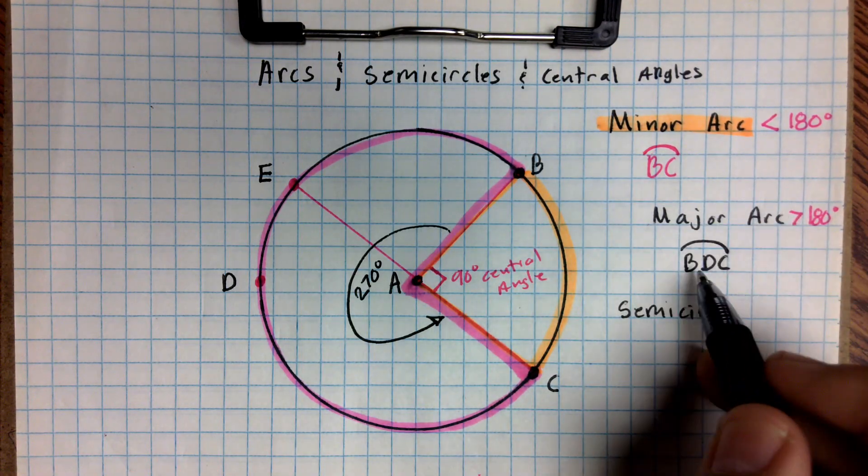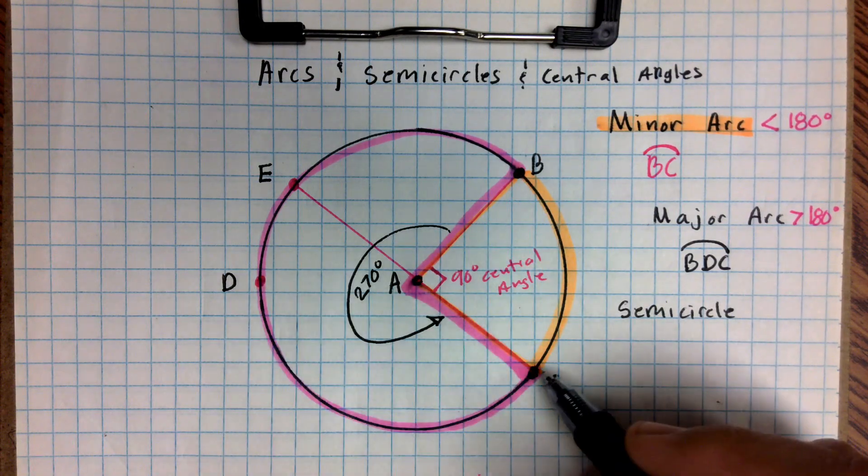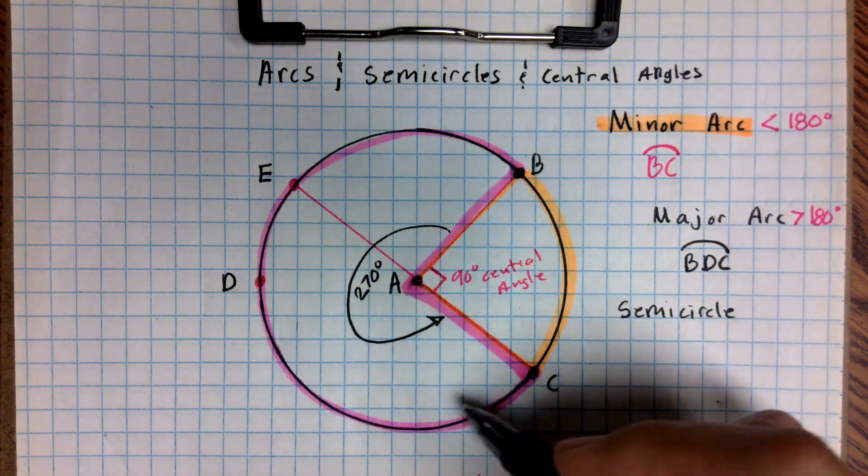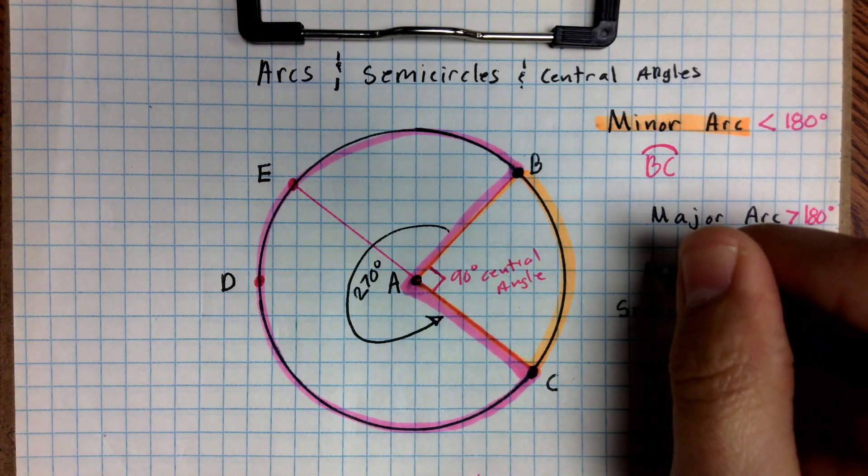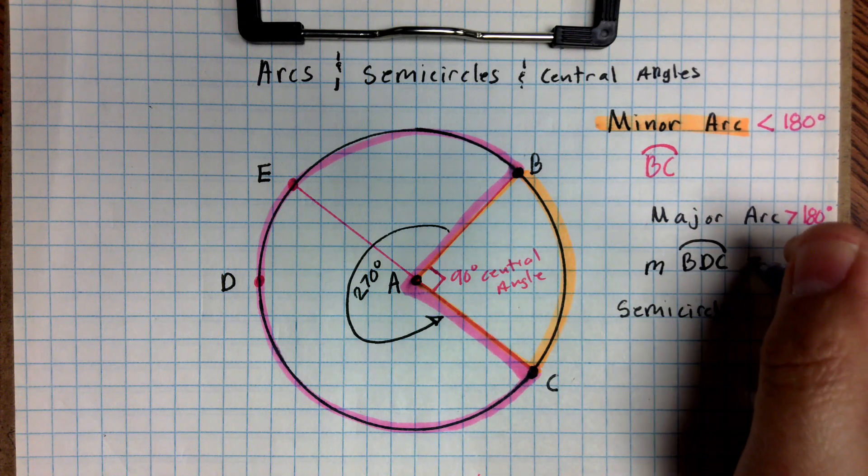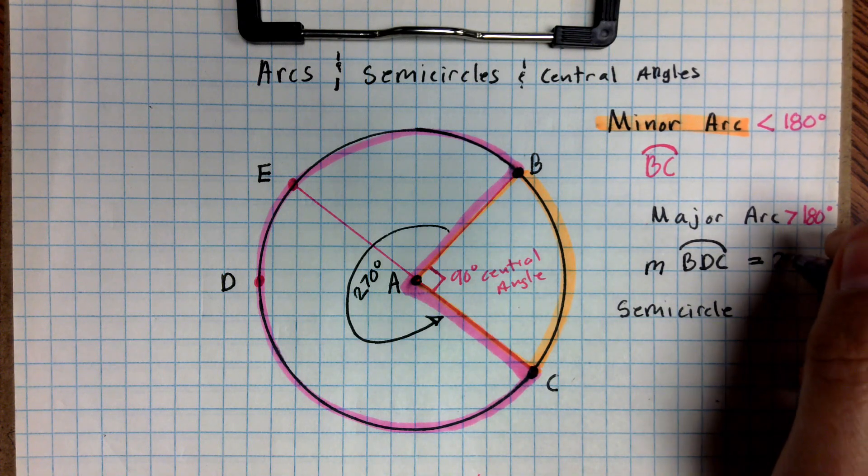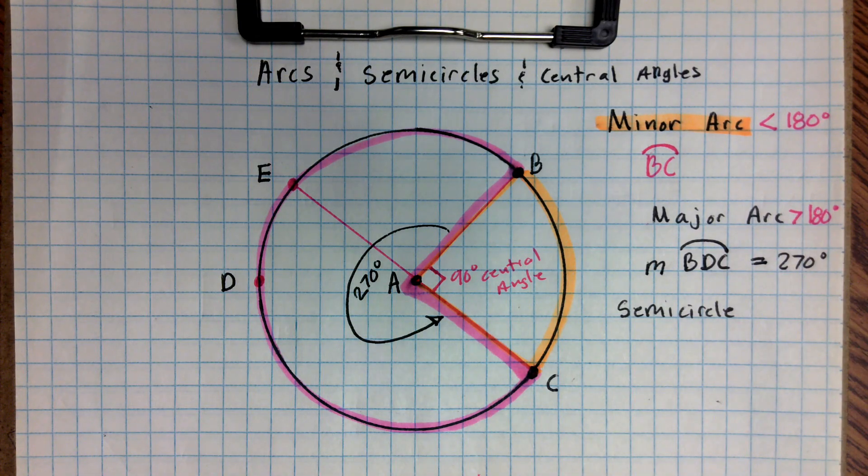So this one we could say our angle here is 270 degrees. So I would call my major arc BDC, three points that are on that arc, on the circumference of the circle representing that arc. And if I wanted to put the measure of it, I could say the measure of BDC is going to be equal to 270 degrees, which notice that is greater than 180.